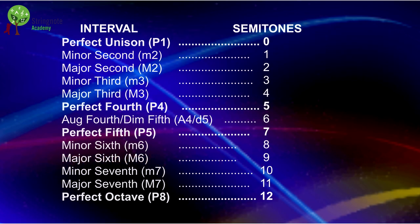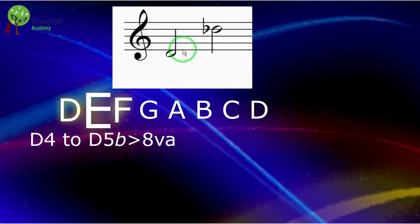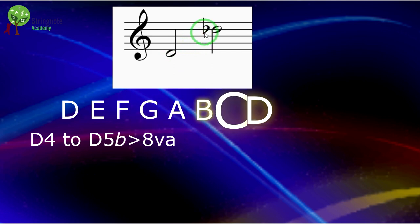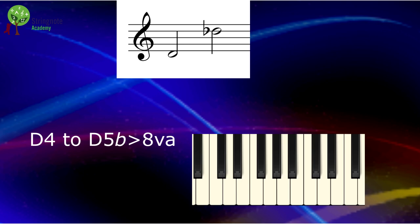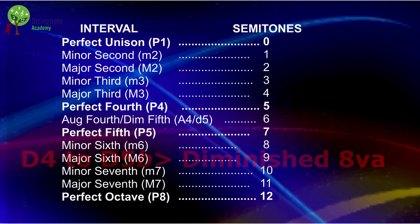Octaves can also be diminished. Look at this. I count and I have an octave: one, two, three, four, five, six, seven, eight. I count the semitones: zero, one, two, three, four, five, six, seven, eight, nine, ten, eleven — and I have eleven. There are no octaves with eleven semitones in my table, so we are facing a diminished octave.